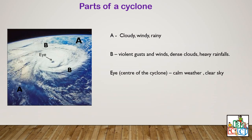Part B is near the eye, and the weather there is very violent — you have violent gusts and winds, very bad weather, dense clouds and heavy rainfall. Then you have the eye of the cyclone, also known as the center of the cyclone, where there is calm weather and a clear sky. These are the parts of a cyclone.